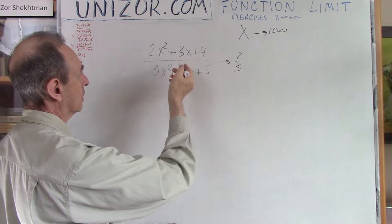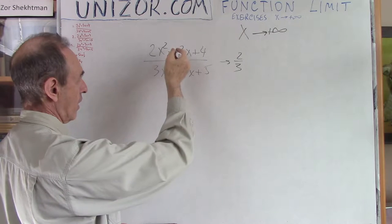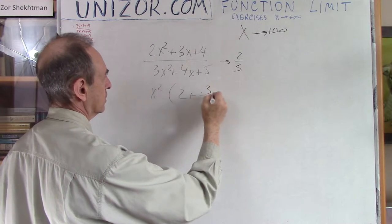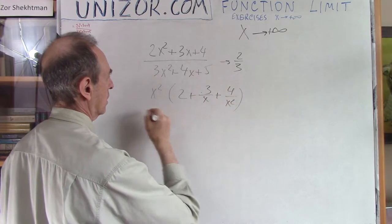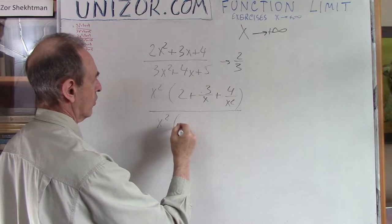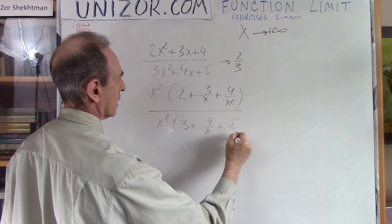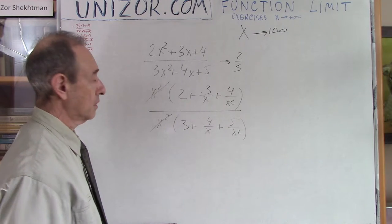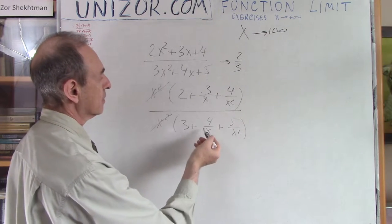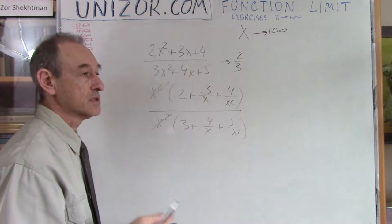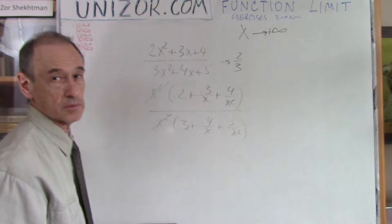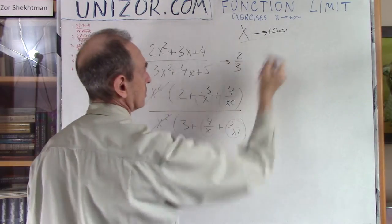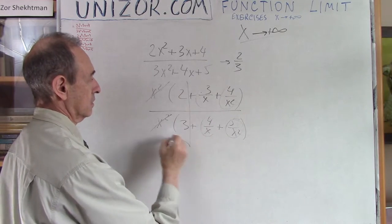Let's divide everything by x² on the top and x² on the bottom — factor out x². It will be x²·(2 + 3/x + 4/x²) over x²·(3 + 4/x + 5/x²). Since x is going to infinity, it's definitely not equal to zero, so we can cancel x², and we no longer have the indeterminate ∞/∞ form. Every fractional piece goes to zero as x goes to positive infinity, so what's left is two-thirds.